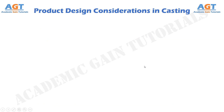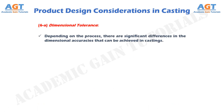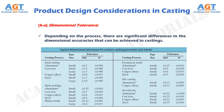Number 6 is Dimensional Tolerance and Surface Finishes. First let's study dimensional tolerance. Depending on the process, there are significant differences in the dimensional accuracies that can be achieved in castings. This table demonstrates typical dimensional tolerances for various casting processes and metals.